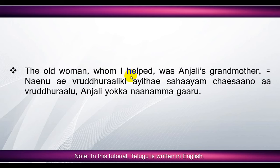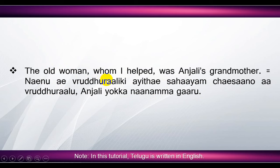'The old woman whom I helped was Anjali's grandmother' means 'nenu yee vruddudduraaliki aite sahaayam chesaino, a vruddudduraalu, Anjali yokka nanamma gauru'. Here, 'old woman' means 'vruddudduraalu', 'whom I helped' means 'yavarik aite sahaayam chesaino'. 'Helped' means 'sahaayam chesaino', 'I' means 'nenu', 'whom' means 'yavarik aite'. 'Anjali's grandmother' means 'Anjali yokka nanamma gauru' — 'grandmother' means 'nanamma', and to show respect we add 'gauru' suffix.